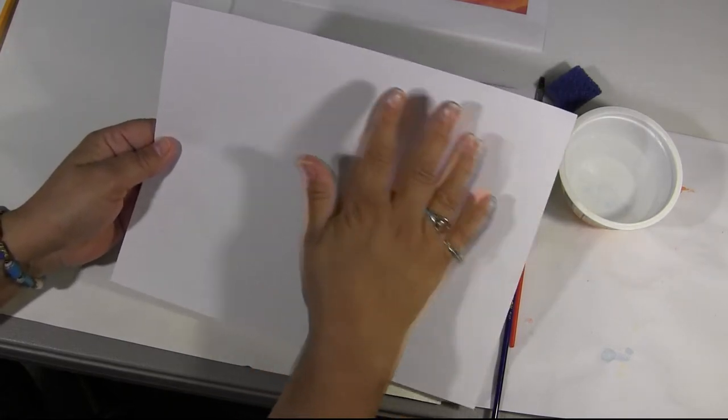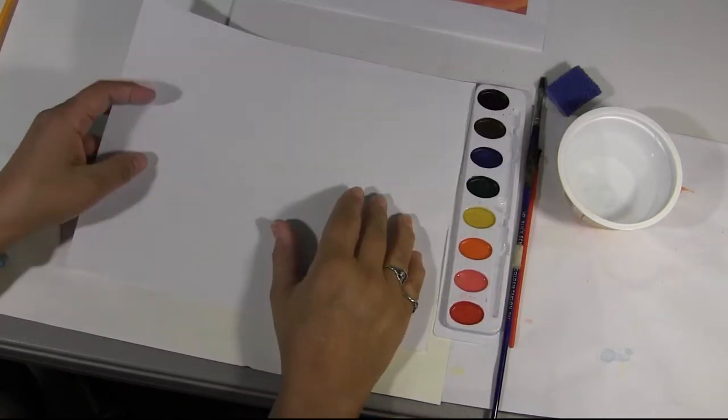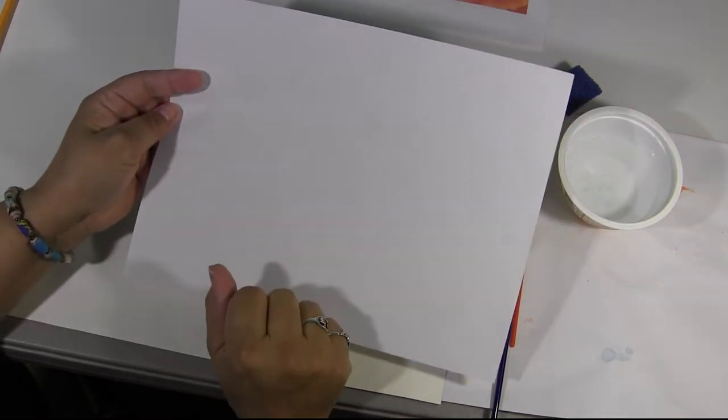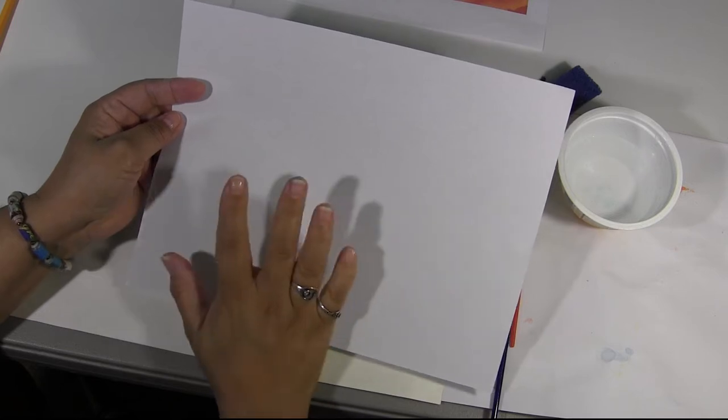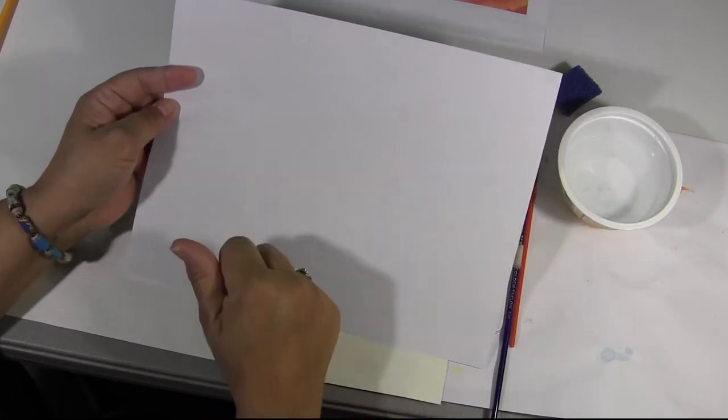The first thing we're going to do is we're going to put a wash, and that means that we're going to put one big color over the whole piece of paper. A color we like and we're going to let it dry and then we're going to come back and do our flower.